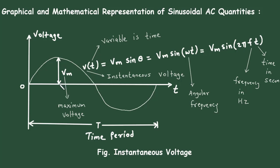What is instantaneous value? These are all the instantaneous values — that means the value at that particular instant is called the instantaneous value. Next is cycle: from 0 through one positive part and one negative part, that complete portion is called one cycle. Time period is how much time it takes to complete one cycle. The number of cycles completed in one second is called frequency. The maximum value is called amplitude.